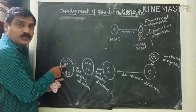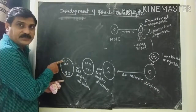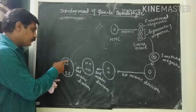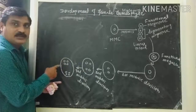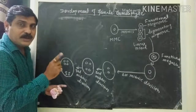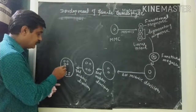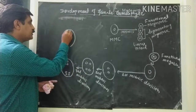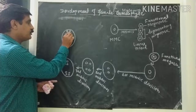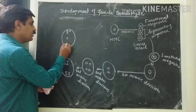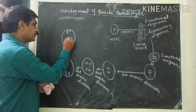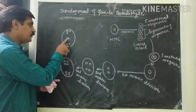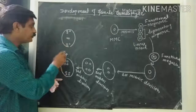Out of the eight nuclei, four are present towards the chalazal end and four are present towards the micropylar end. Out of each group of four, one nucleus migrates to the center. So from the chalazal side, four nuclei are present but one migrates to the center; similarly from the micropylar side, four but one migrates to the center. Thus migration of one nucleus from each side takes place.